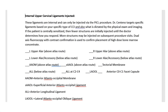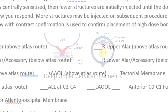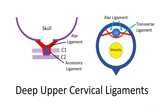Next up are the internal upper cervical ligaments injected. These are the ones that can be reached from the front during a PICL approach. These are all deep upper cervical ligaments. The most common ones that patients often hear about are the alar ligament, accessory ligament, and the transverse ligament. Realize that we can get at some of these ligaments two different ways.